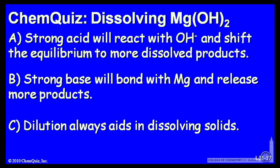Let's look at a possible explanation for each answer. A, strong acid will react with OH⁻ and shift the equilibrium to more dissolved products. B, strong base will bond with magnesium and release more products. Or C, dilution always aids in dissolving solids. Think about those three possible explanations and make a selection.